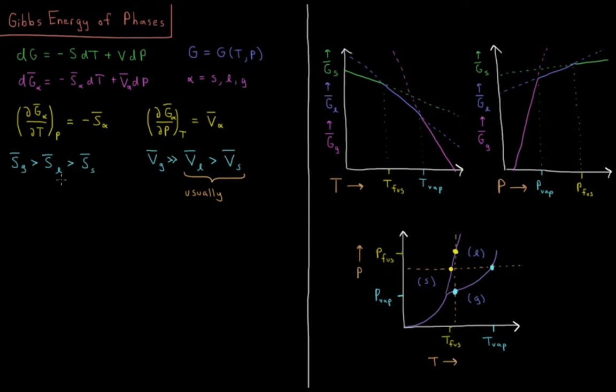If we take these facts and plot the molar Gibbs energy of these phases versus temperature, we see that the derivative of this is relative to the negative molar entropy. So for a solid, it's going to have a slope which goes down slowly with temperature. For a liquid, it's going to have a slope which goes down quicker due to its bigger entropy. And for a gas, its entropy is much bigger, so it's going to go down much faster.